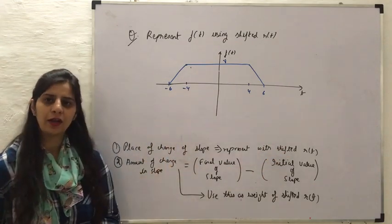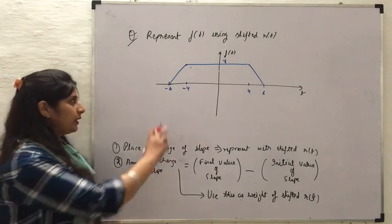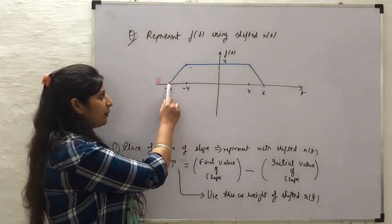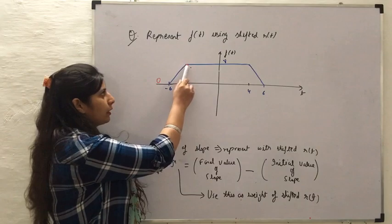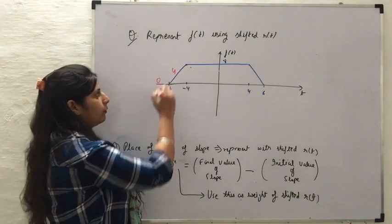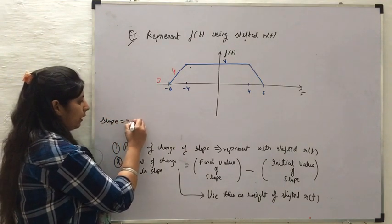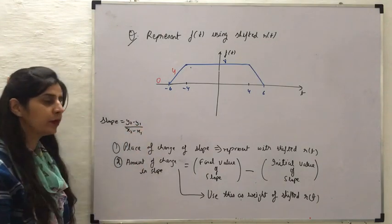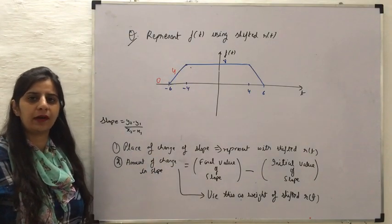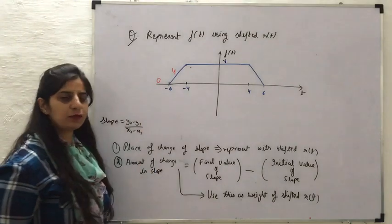At each place where the slope is different, I will mention what the slope is. When the signal has no value, the slope is 0. It then changes at a certain time instant and has a constant slope until T equals minus 4, where the slope comes out to be 4. We can find this using the slope formula: slope equals y2 minus y1 divided by x2 minus x1, applying it between the two relevant points.